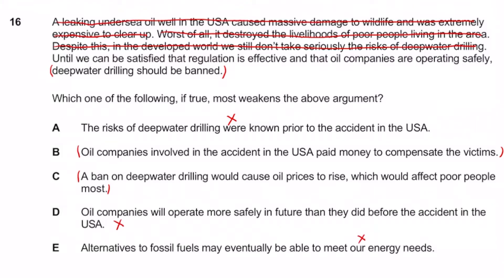It's between B and C. I don't like B as much because even if that one company compensated, you can't be sure other companies would do the same — it's just one example. Option C is stronger because a ban on deep water drilling would cause oil prices to rise and affect poor people most, which directly undermines the case for a ban more broadly. So C is the correct answer.